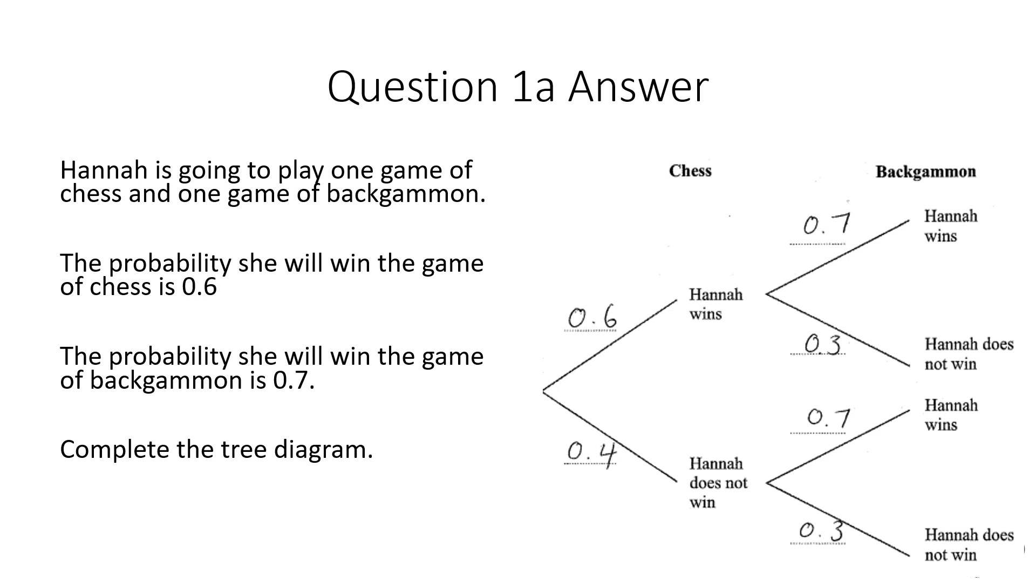If you take a look here we've got the chess first. So these are your first set of branches. Well we already knew that probability of her winning was 0.6. So the probability of her not winning must be 0.4. And that's because remember probabilities have always got to add up to one when they're written as decimals. So if we take 0.4 away from one we get 0.6. If we take that 0.6 away from one we get the 0.4.